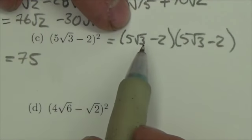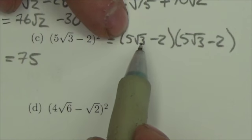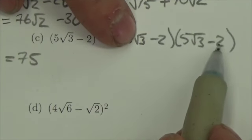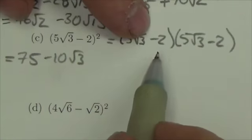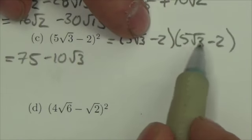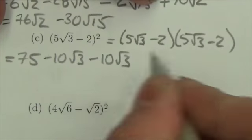But then, and this is the part that a lot of people are going to forget, then I have to multiply 5 root 3 by this negative 2 to get negative 10 root 3. And then I move on to distribute this negative 2 to this 5 root 3, so for another negative 10 root 3.